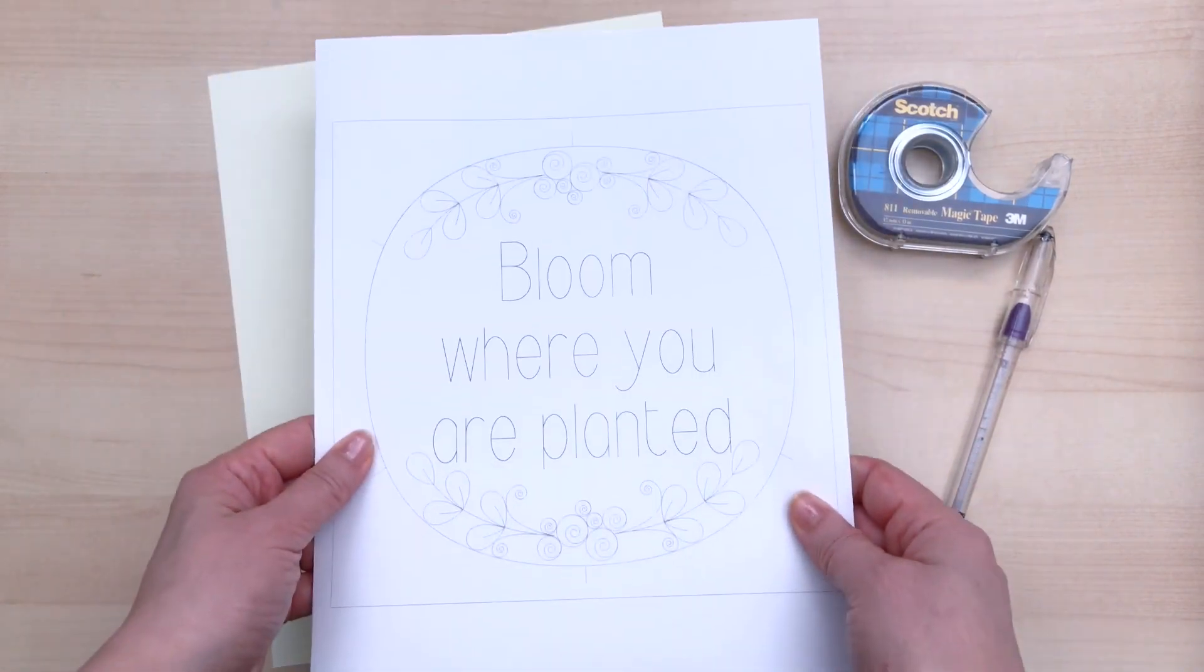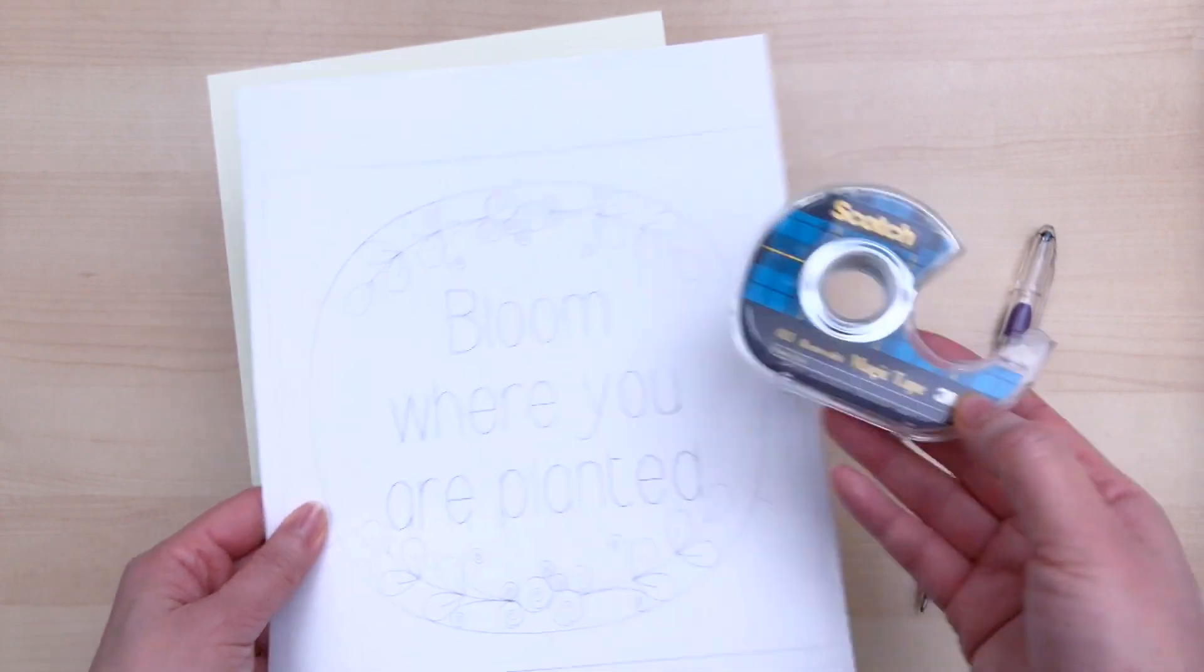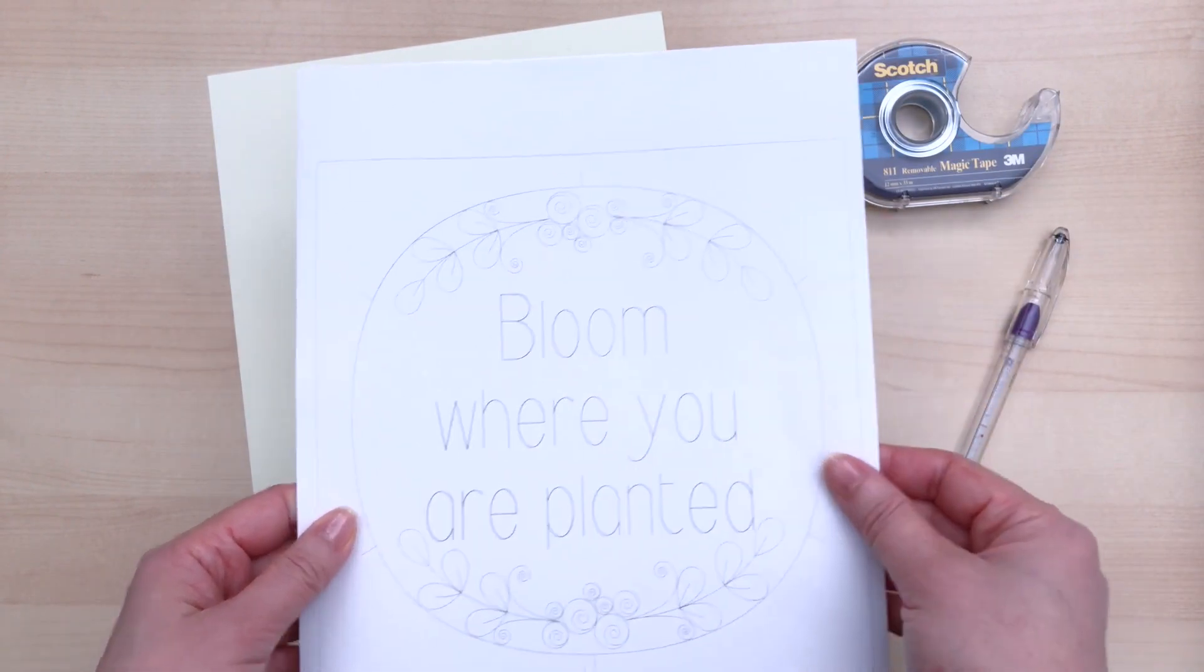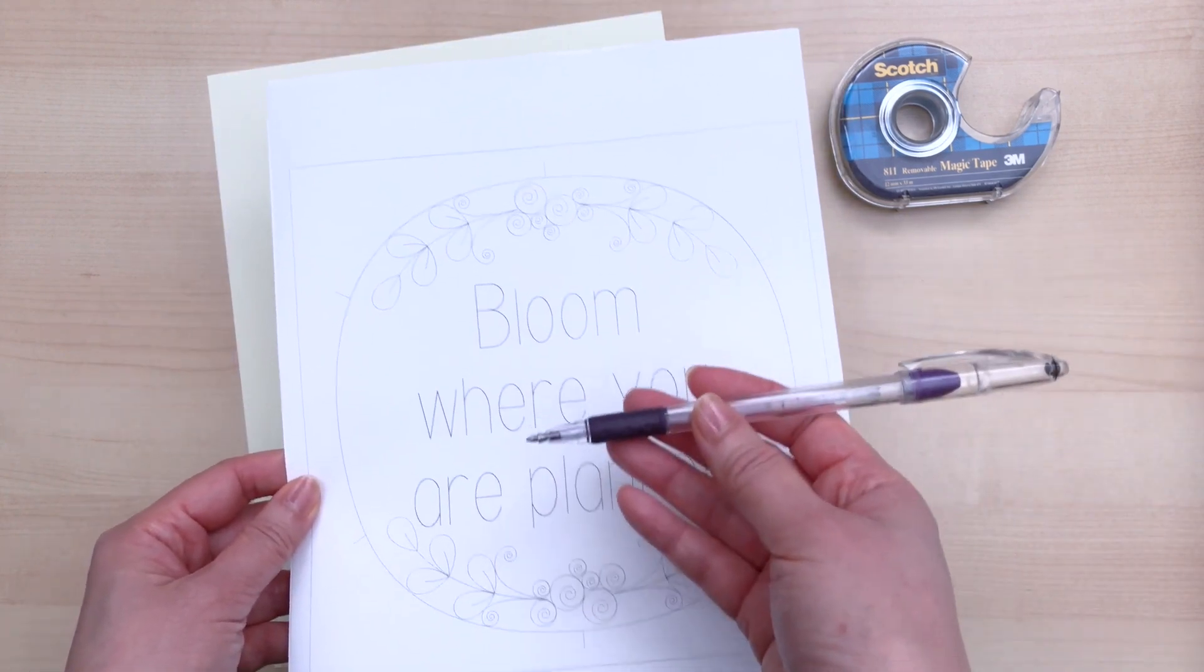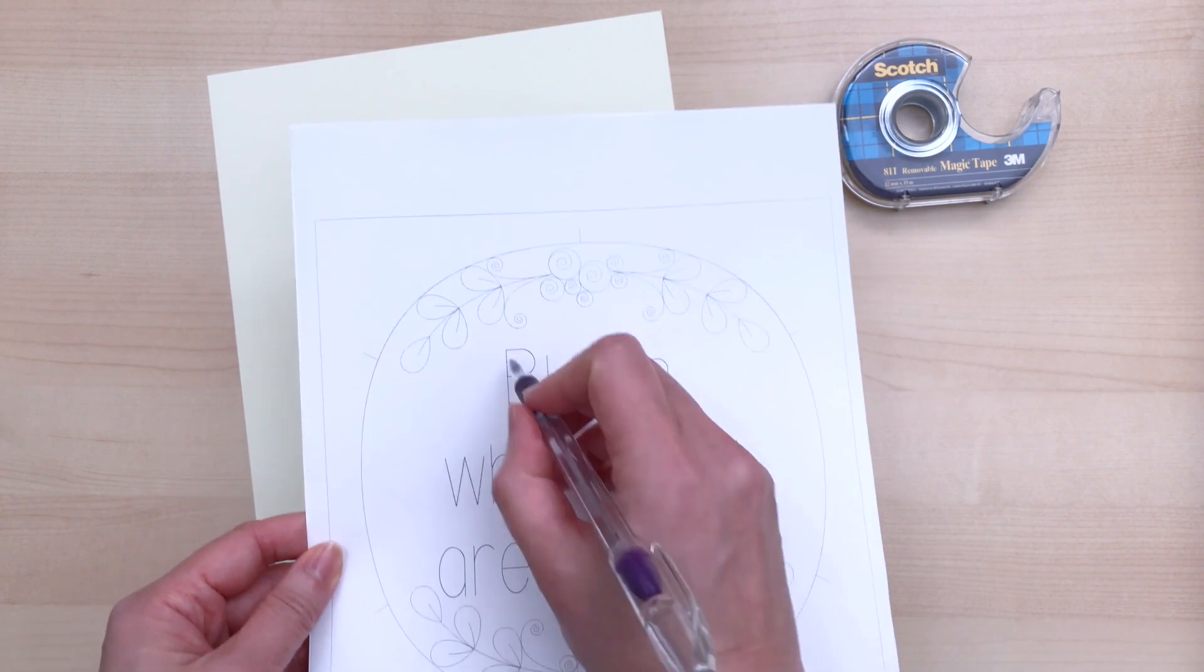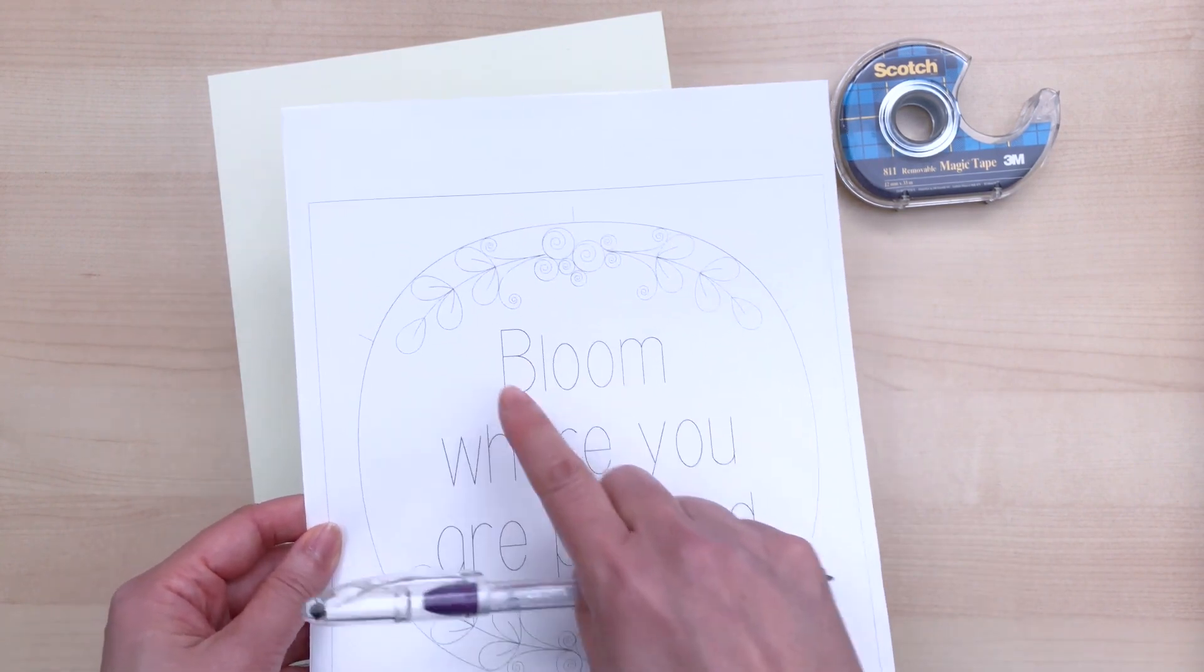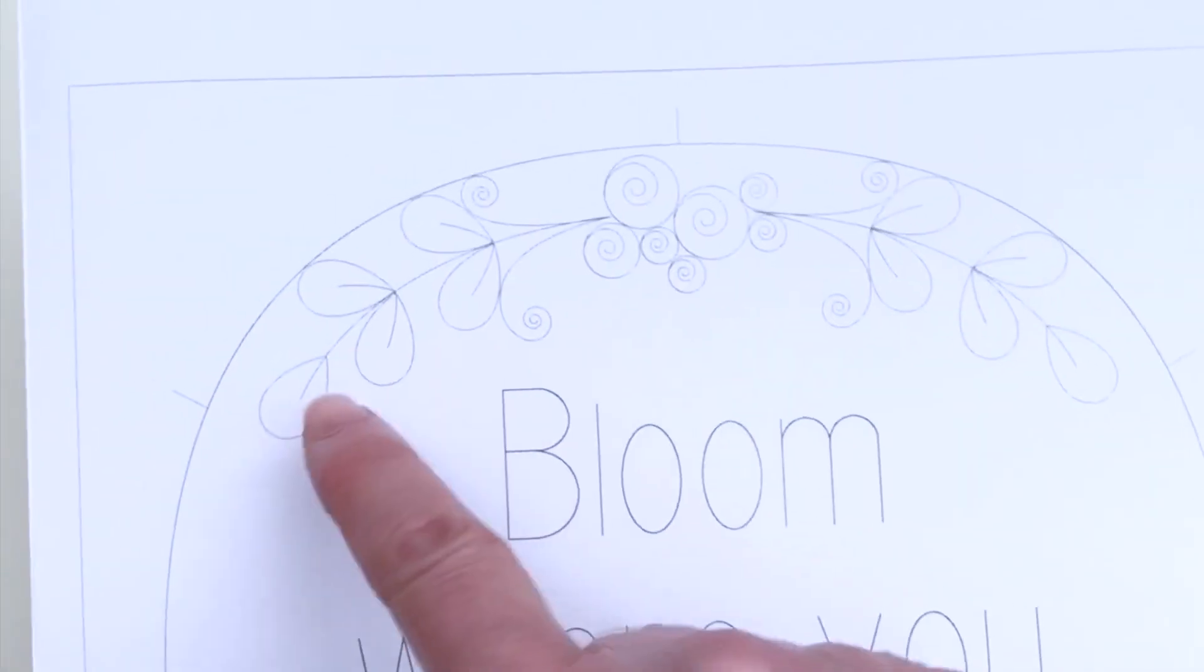And make sure it doesn't move around by using something like Scotch removable tape. When you go to remove this tape it's not going to damage any of your paper fibers. So then we're going to take a dried up pen or some other kind of scoring tool and press quite firmly on all those letters. For any of the straight areas I do use a ruler just because I like things straight.